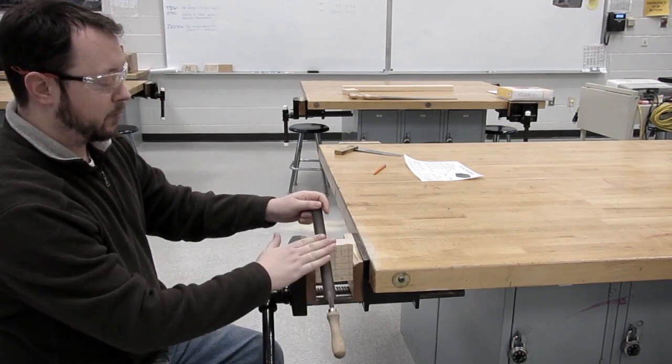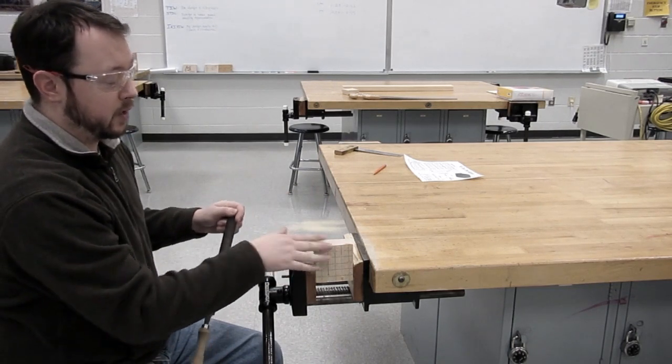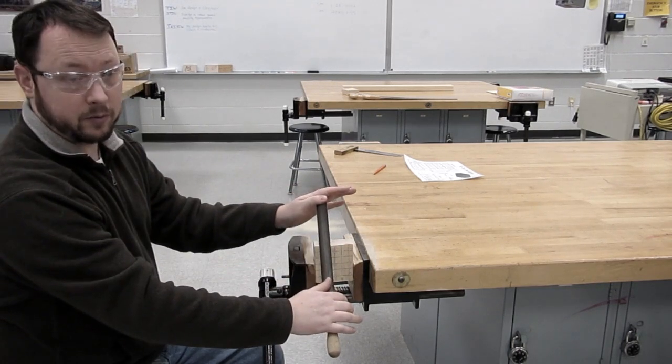What a chamfer is, is we're going to make this a 45. We're going to take our 90 degree angle here, our square edge and turn it into a 45 degree angle.